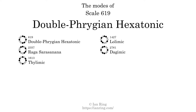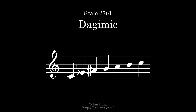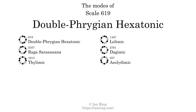The fifth mode is scale 2761, also known as Dijimic. The sixth and last mode is scale 857, also known as Lulimic.